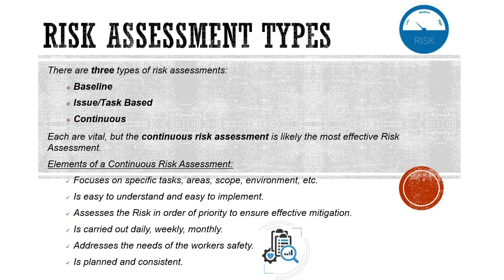The second is an issue or task-based risk assessment, which drills down to the specific things you are going to be doing on site. A baseline risk assessment tells us your scope of work, how many employees you have, your training system, and medical surveillance — especially relevant in the plumbing industry where you may work with chemicals or biological hazards. It gives an overall view of working with geysers, hot water, and high-pressure water, but does not drill into specific installations.